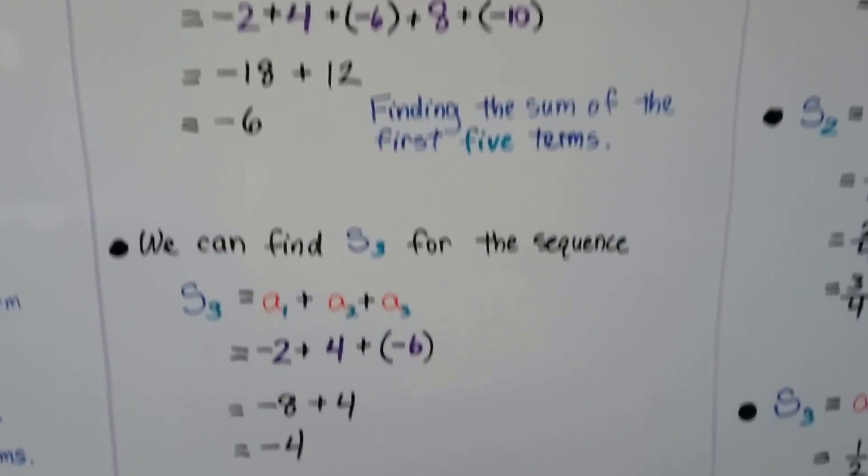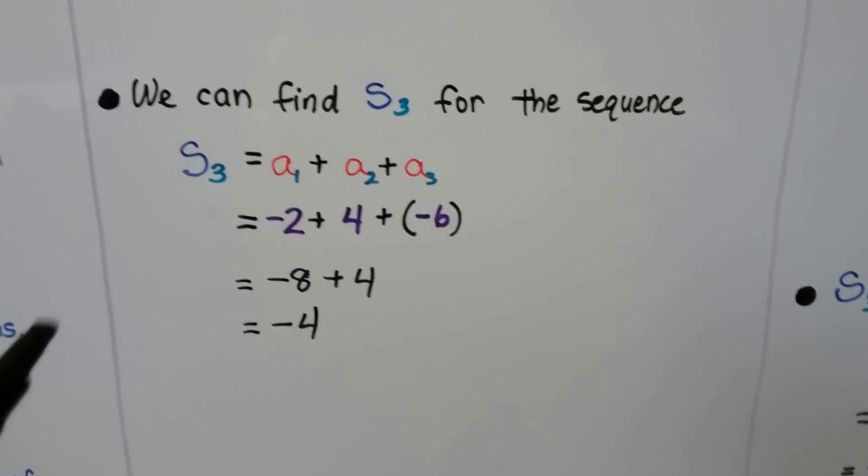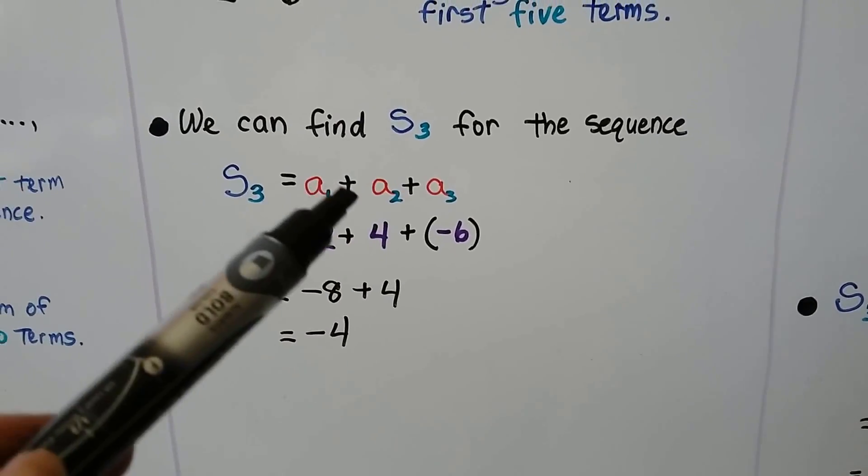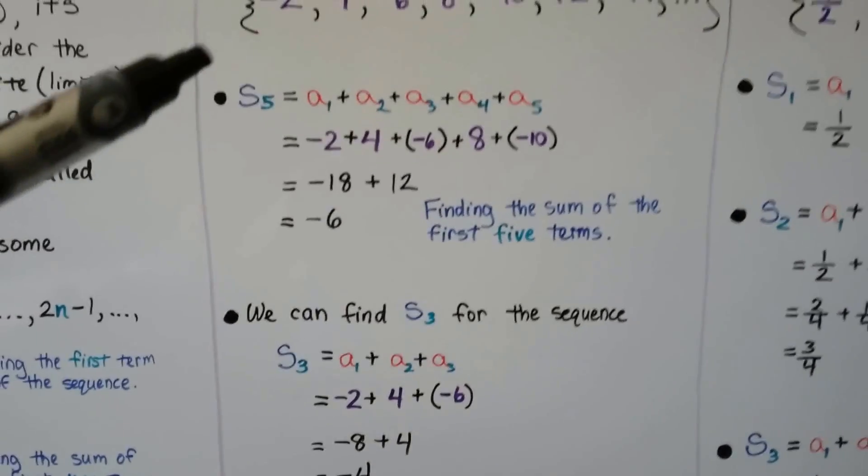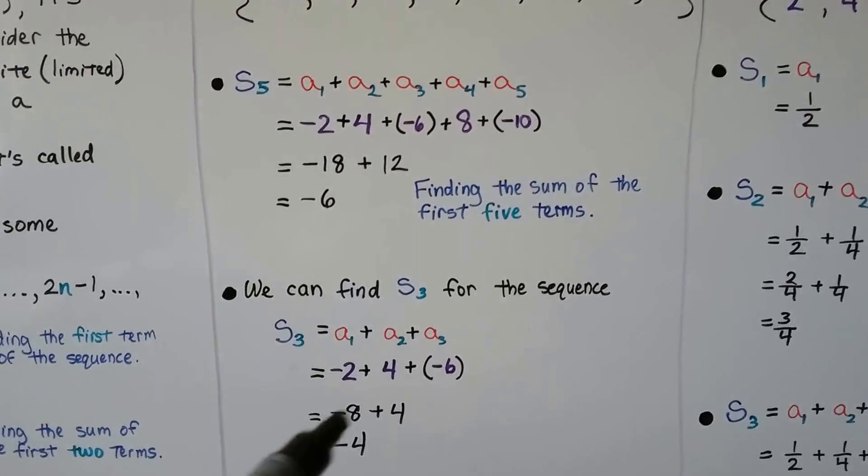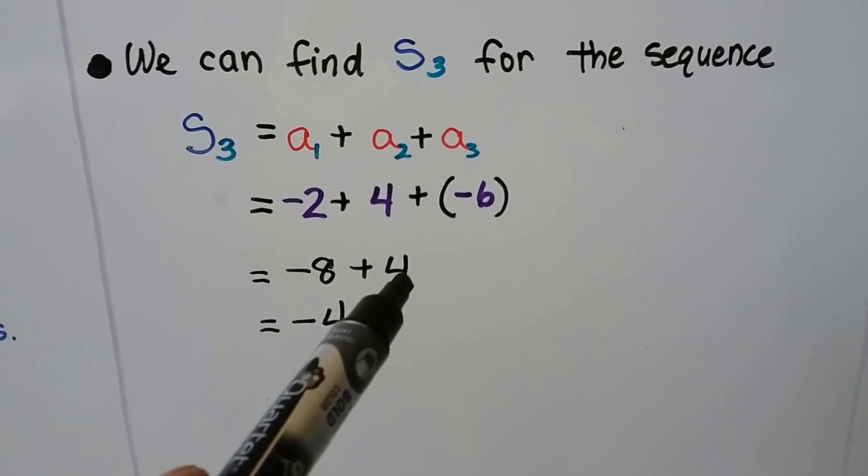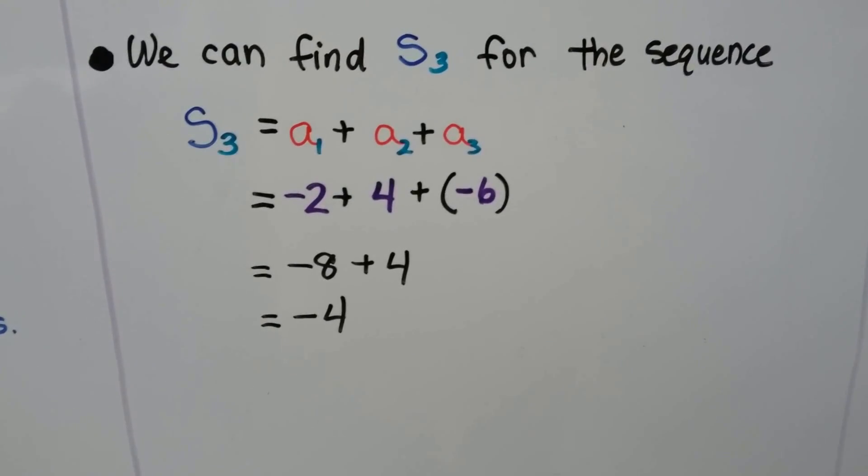We can also find the sum of the first three terms, S_3. There's a little 3 here. So we're going to do the first three terms, which are -2, 4, and -6. We can add the negatives together and get -8. We add the positive 4 and we get -4.